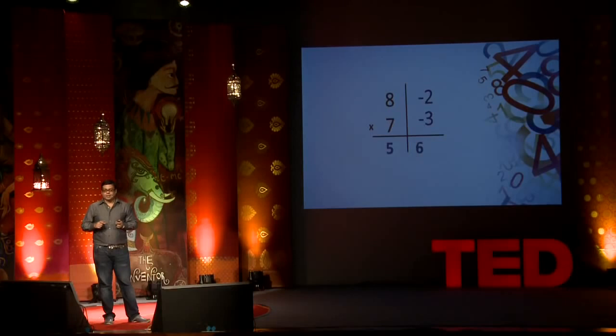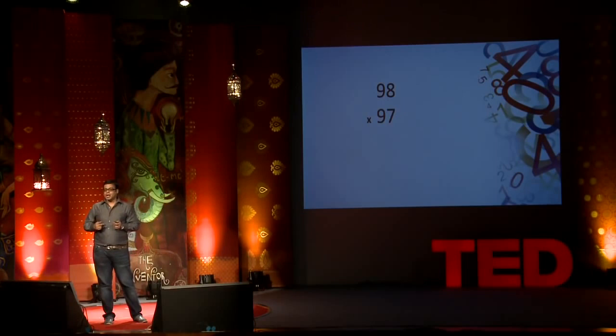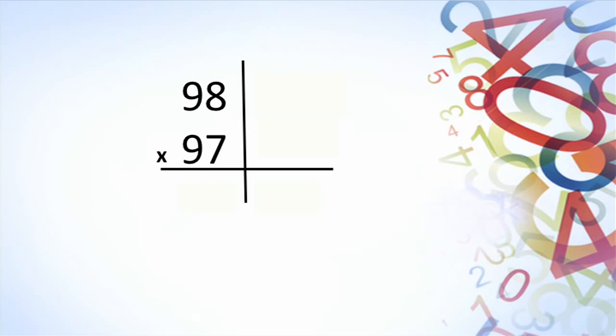So we can extend this rule which is called the base method to a sum called 98 times 97. Let's do this together. Is 98 above 100 below 100? Below by how much? So we got minus 2. And 97 is below 100 by 3. So we got minus 0,3. So 98 minus 0,3 gives us 95. And 0,2 times 0,3 gives us 0,6. So a big problem like this can be solved in a matter of few seconds making maths easier.